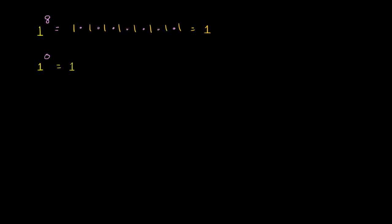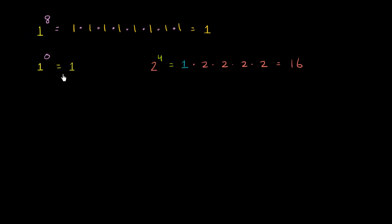That's clearer when we look at something like 2 to the 4th power. Using our other definition of exponentiation, you start with a 1 and then multiply it by 2 four times: times 2, times 2, times 2, times 2 — which equals 16. So if you start with a 1 and multiply it by 1 zero times, you still have that 1. That's why anything that's not 0 to the 0 power is going to be equal to 1.